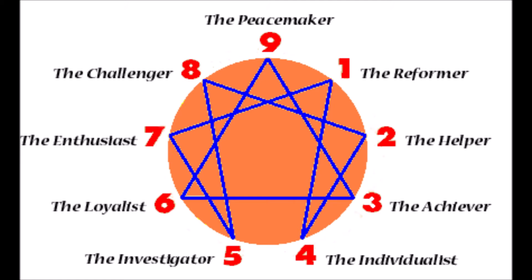Each basic type in the Enneagram is also connected by two lines to two other basic types. For example, type 1 is connected to type 7 and type 4. The first line connects to the type which the person has left behind or repressed in childhood — the characteristics of this type must be reintegrated in order for the person to develop. The second line connects to the type which the person may grow into once they are ready to reach a higher state of development. These connecting lines highlight how each basic type possesses indispensable strengths, but at the same time has darker sides that are full of challenges.